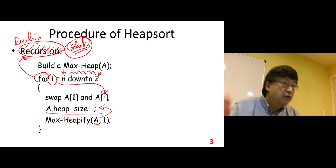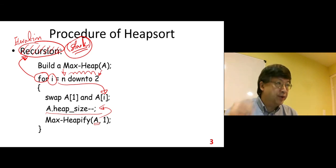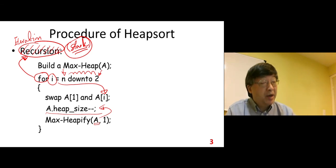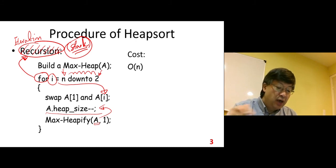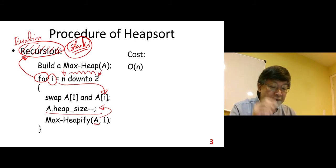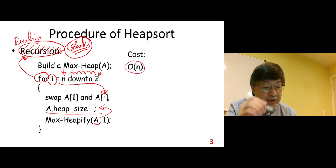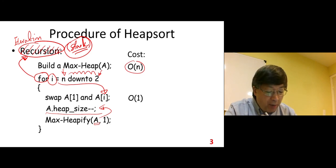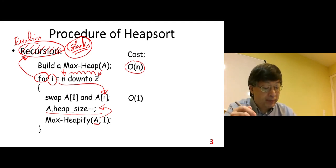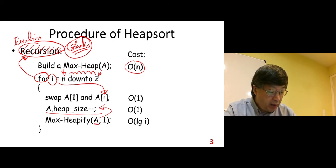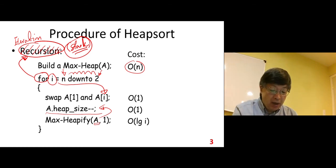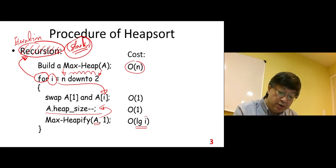After we complete this for loop, we get the whole array sorted. Now let's look at the cost of this whole procedure. Build a max heap — we only do once, so we pay this cost only once. Swap operation — each step we pay O(1). Reduce the heap size by 1 — O(1). Then the max heapify — O of the height, which is log of i, because the current heap size is i.